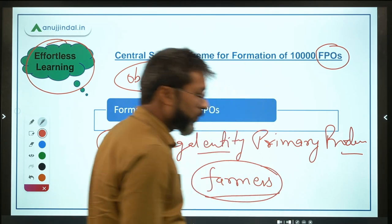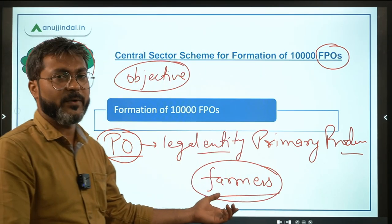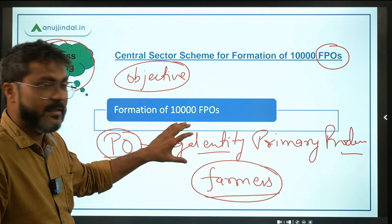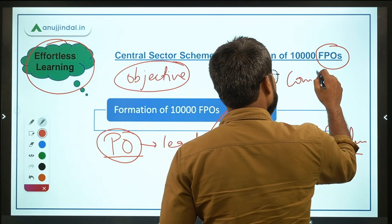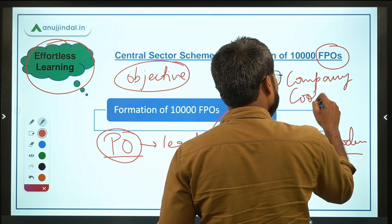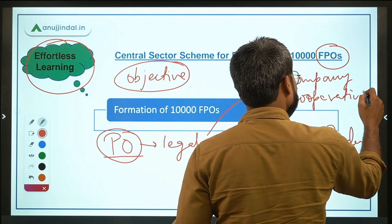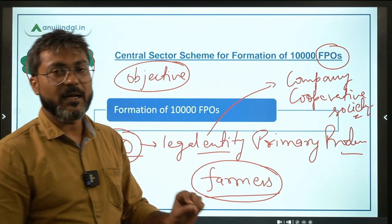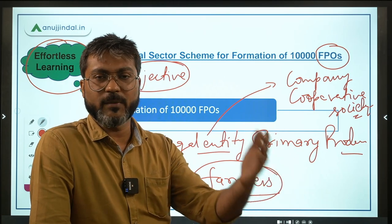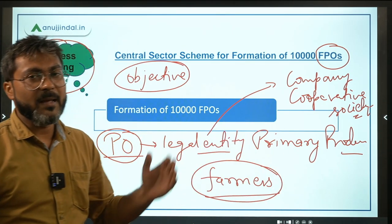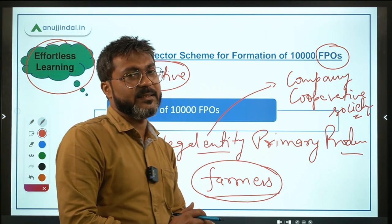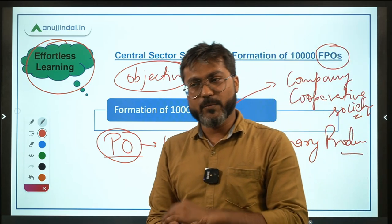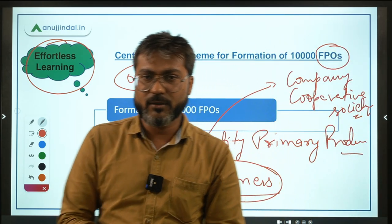If you have understood the meaning of Producer Organization, then Farmer Producer Organization is easy to understand. A Producer Organization is a legal entity — it can be a company or a cooperative society. The members are primary producers like farmers, fishermen, weavers, and artisans. If the members are only farmers, then that producer organization is known as a Farmer Producer Organization.